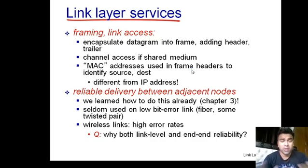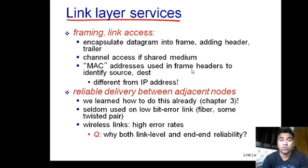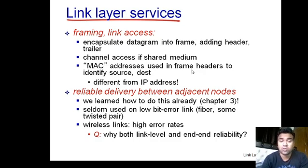The Data Link Layer has several services beyond just transferring frames. The main task is transferring frames using MAC addresses, but additional responsibilities are handled via the header and trailer. The Data Link Layer is the only layer providing a trailer, which contains Cyclic Redundancy Check (CRC) bits — 32 bits in the case of Ethernet — used for detecting errors at the destination or next node.